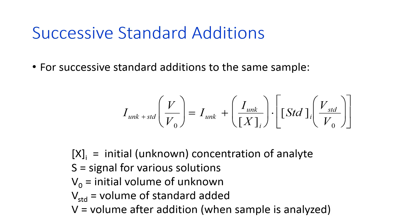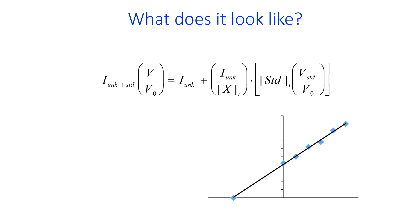This is the standard addition equation, and what you should notice about it is that it looks like the equation of a line, y equals mx plus b. So on the plot there, the points from the y-axis and then over to the right are your standard additions. So the one that's right on the x-axis, no standard added, is just your unknown. And then you add your standard to the unknown and the signal goes up.